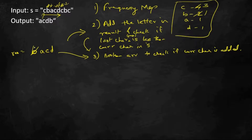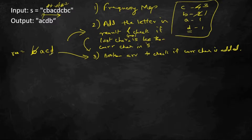Next current character is B. I check the boolean array — B is not present. I check whether B is greater than D (the last character in result) — it is not. So I need to remove D, provided D has more occurrences later. I check: decrementing D's frequency gives 0, which is not greater than 0, so I cannot remove D. Therefore I keep D as is and add B. Result becomes A, C, D, B. The final character is C, which is already in the result, so I skip it. Final result: A, C, D, B — matching the expected output.